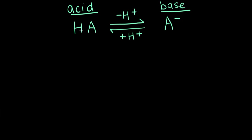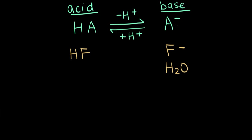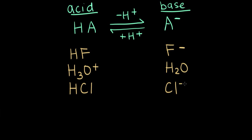Let's look at some more examples. HF, or hydrofluoric acid, has the conjugate base F⁻ — HF is our acid, and when it loses a proton, we are left with F⁻. In the same reaction, water acts as a base, and when water accepts a proton, it forms the conjugate acid H₃O⁺. We can also talk about the conjugate base of a strong acid like hydrochloric acid. HCl is a strong acid, so it completely dissociates — it gives away all of its protons, and when it does that we're left with the conjugate base, chloride. Even though chloride isn't particularly basic, it's still the conjugate base of HCl.